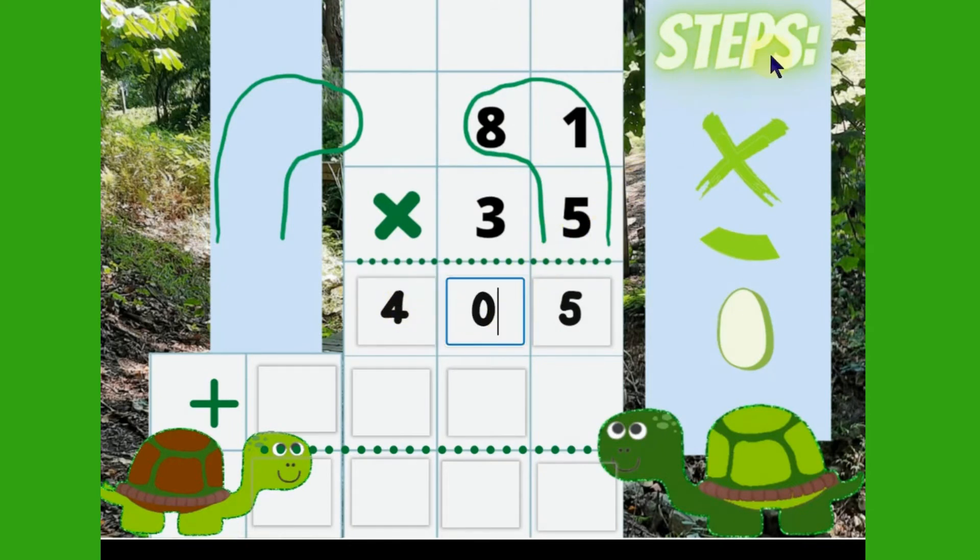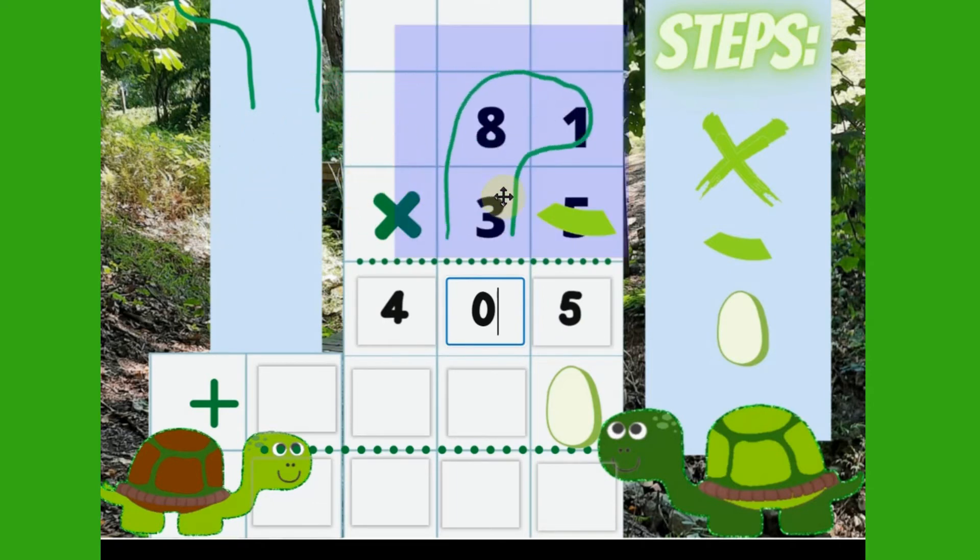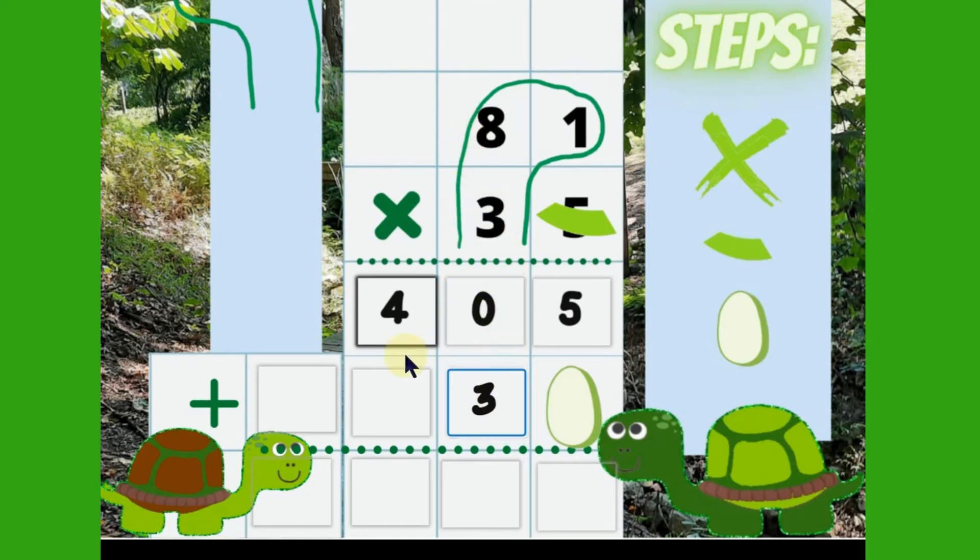Time for the three steps. There is nothing to cross off. Draw a collar. Now drop an egg under the collar. Time to multiply the tens place. Our turtle now looks the other way. Do you remember the last step is to add the numbers together?